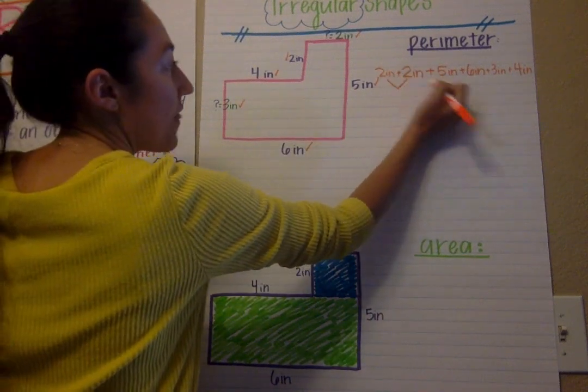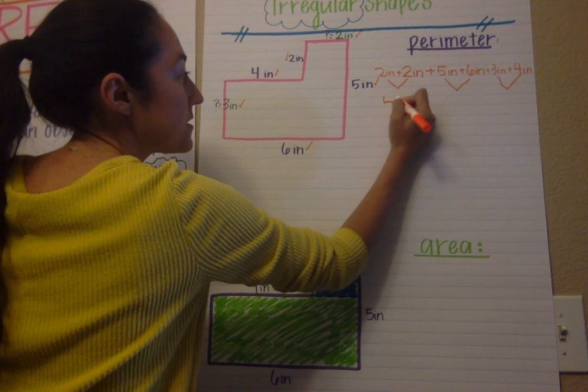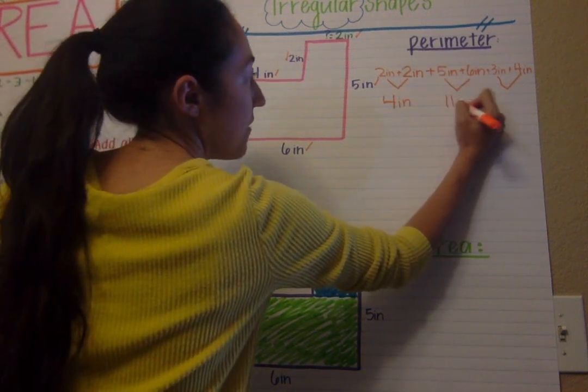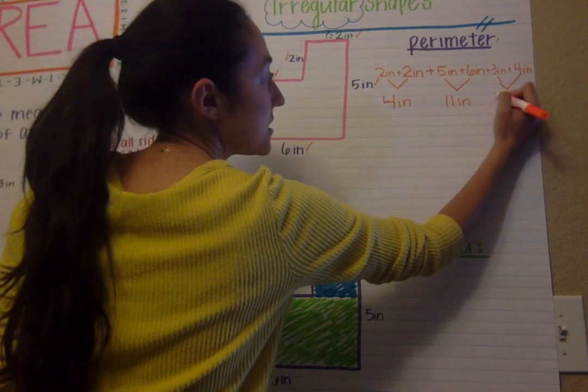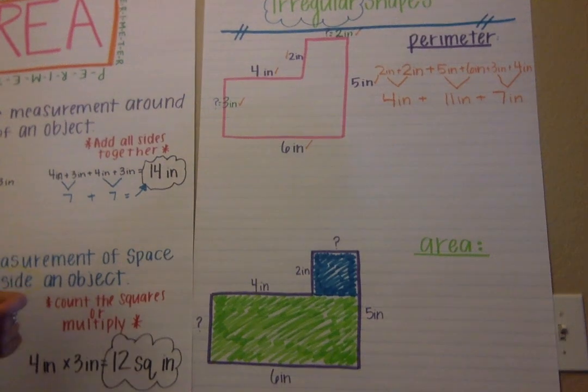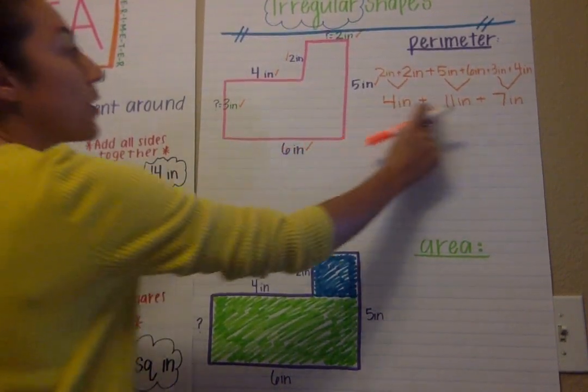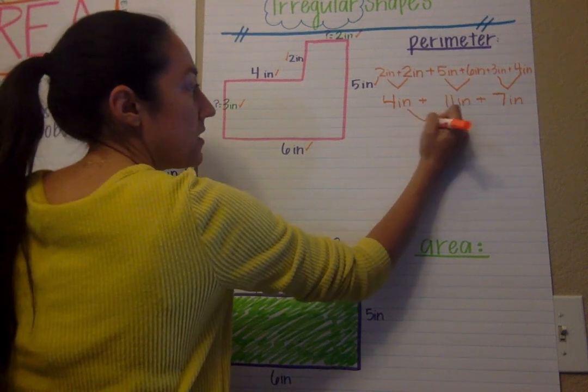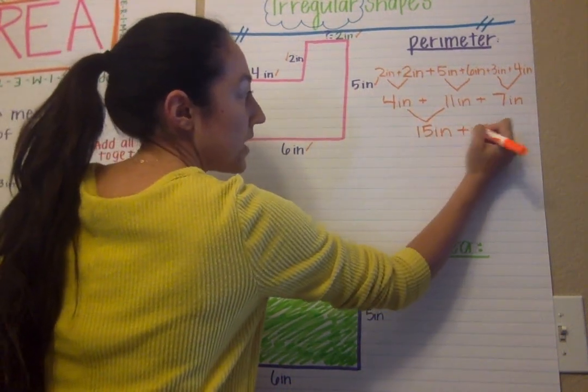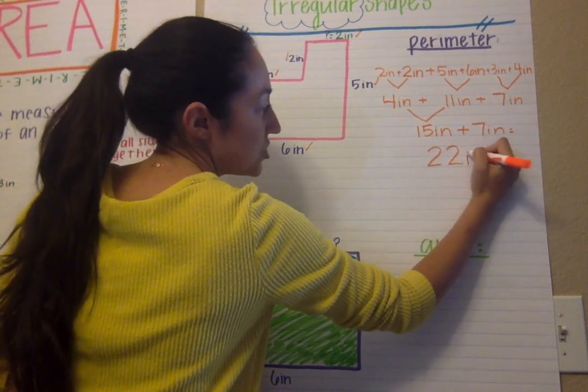So now we can add them together. Two plus two is four. Five plus six is eleven. Three plus four is seven. And now we can add all of those together. So four plus eleven is fifteen. And then fifteen plus seven is going to equal twenty two inches.